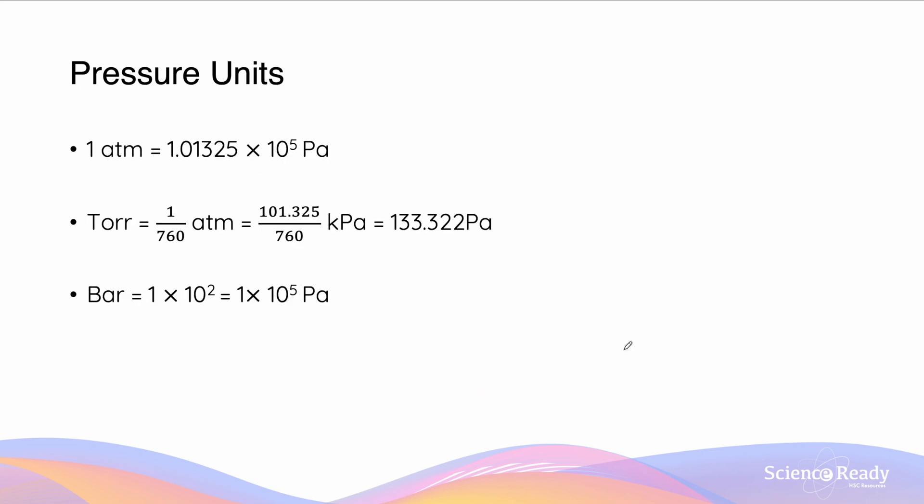Pressure has a wide variety of units. An atmosphere is the pressure within the atmosphere of Earth, and that's equal to 1.01325 times 10 to the 5 pascals. One torr is equal to 1 on 760 atmospheres, or 133.322 pascals. And one bar, which is an upcoming unit which we use more often, is equal to 1 times 10 to the 5 pascals, or 1 times 10 to the 2 kilopascals. You won't have to memorize these units, they should be given to you in an exam.